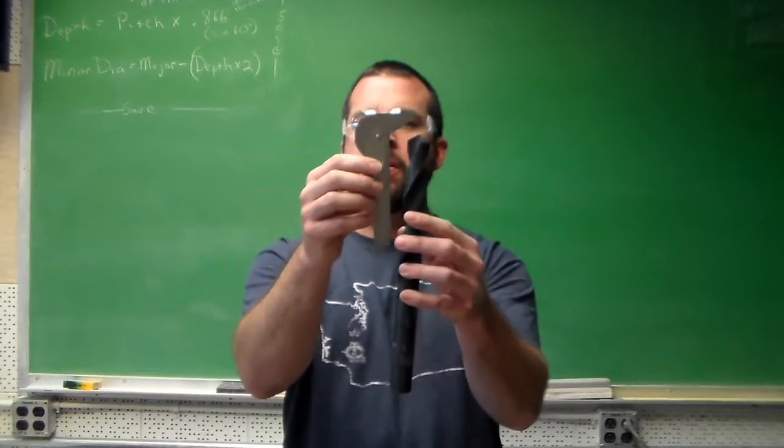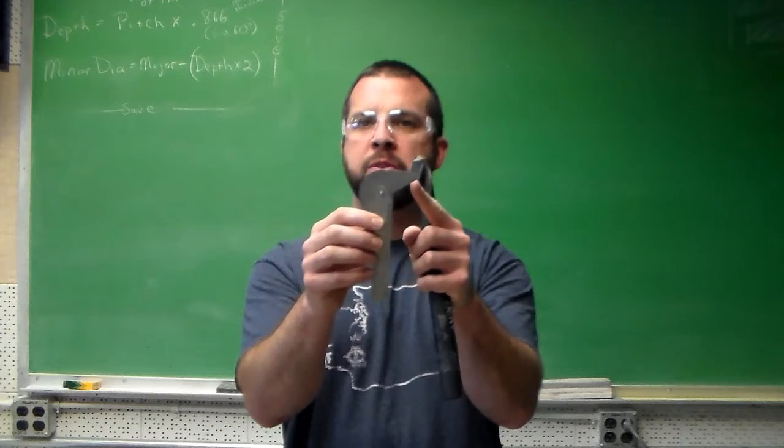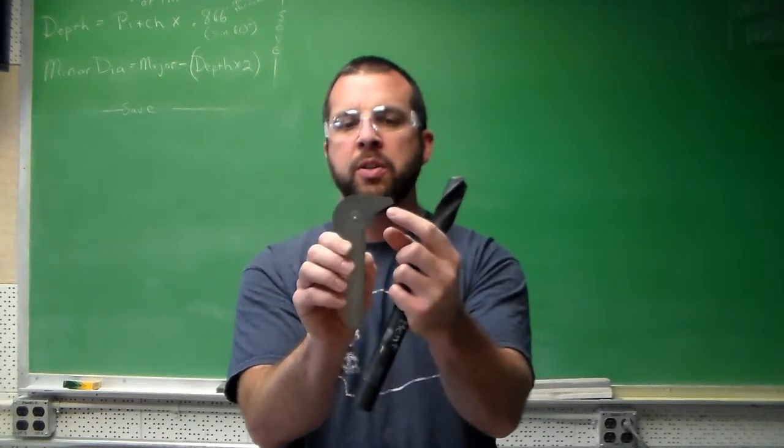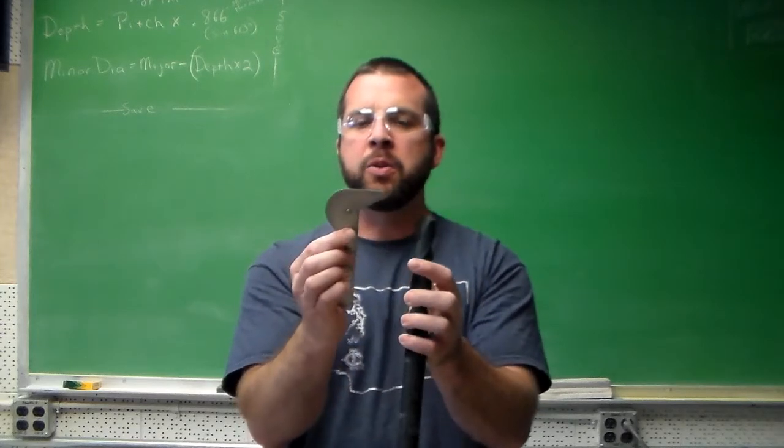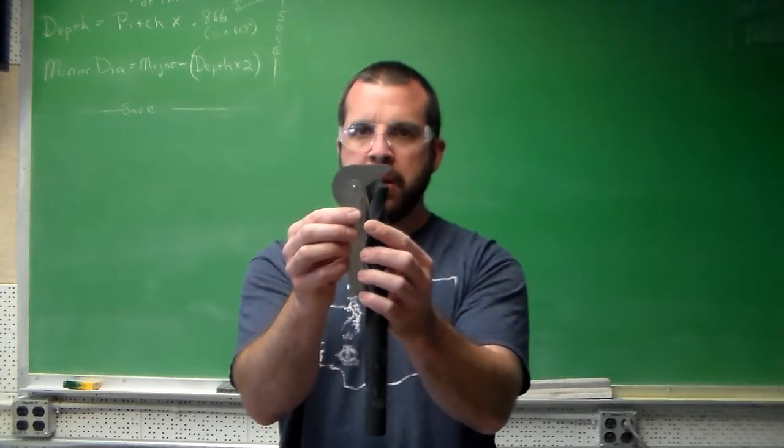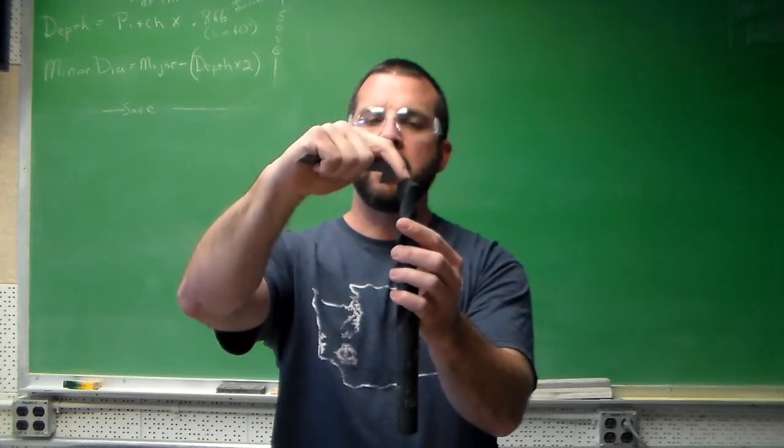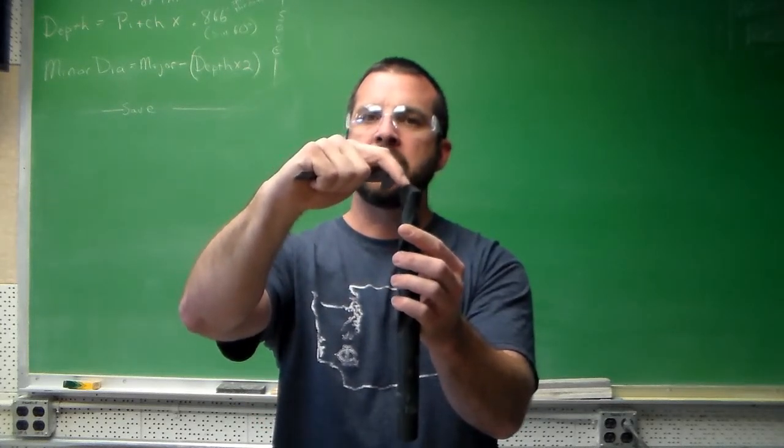And then I have my angled surface right here that has a whole bunch of little markings on it. Now those markings are going to be what I'm going to reference while I'm looking at my drill up to the sharpening gauge, and I'm seeing where the point of the chisel edge